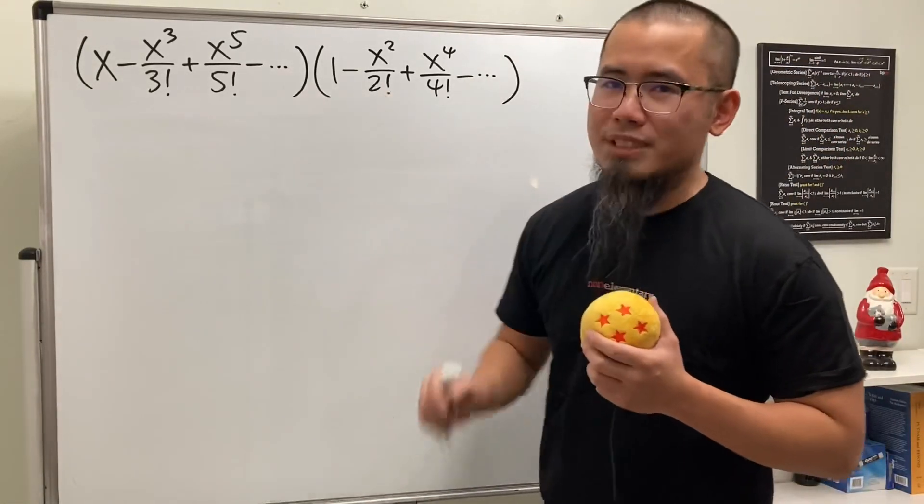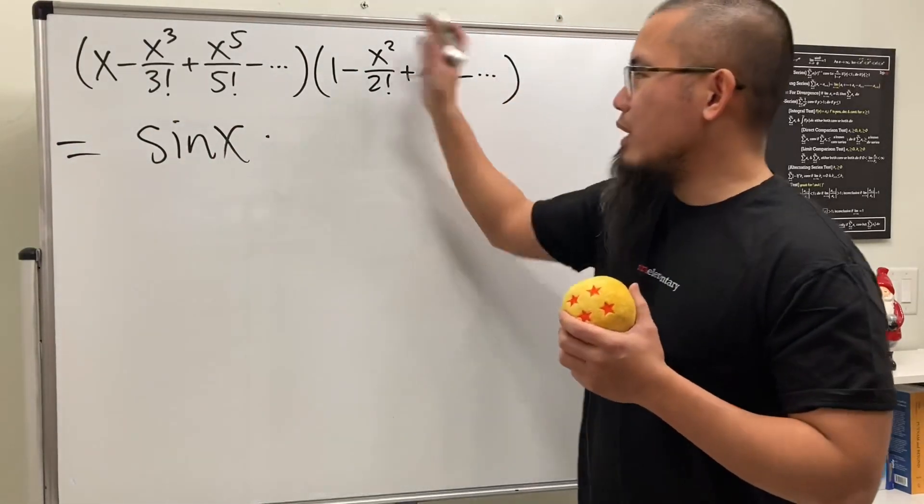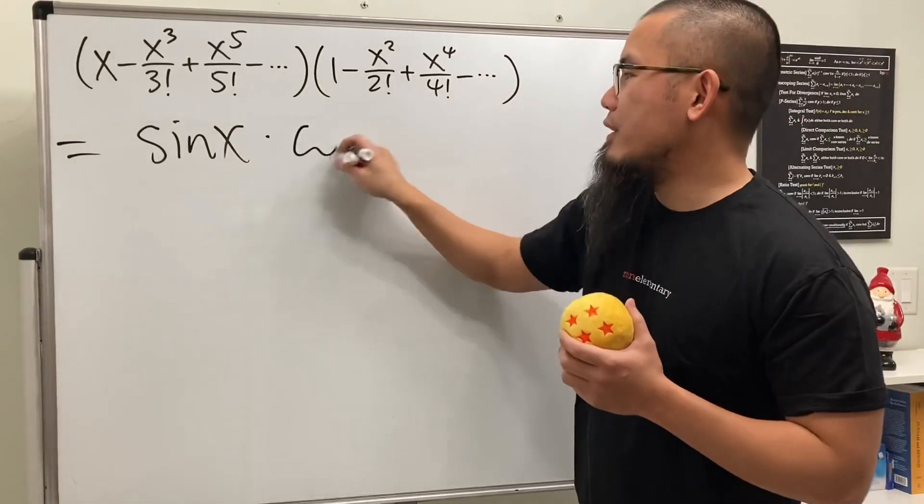Don't worry, this is actually a power series. And we see all the odd numbers. This is nicely equal to sine x. And this right here, we have all the even numbers. We have cosine x.